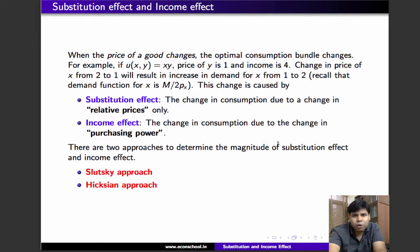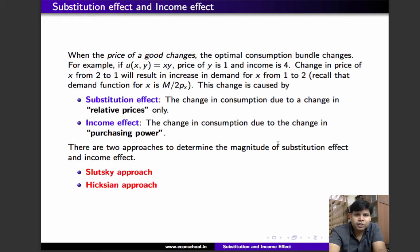The second reason is: since the commodity bundle the consumer was already buying will now cost less, and since his income hasn't changed, he'll be left with some money if he continues to buy the same bundle. So a fall in price of x can be thought of as an increase in purchasing power. When he uses that money to buy goods, his demand changes. This is called income effect.